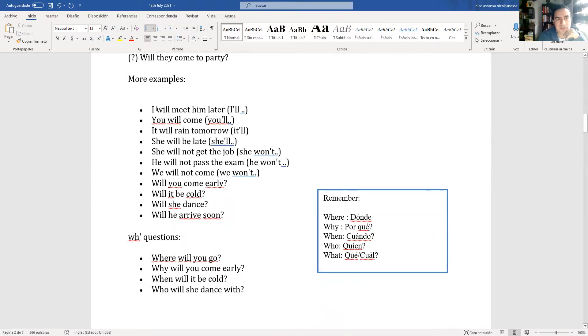More examples: I will meet him later, contraction I'll. I'll meet him later. You will come, contraction you'll come. It will rain tomorrow, it'll rain tomorrow. You will be late, you'll be late. She will not get the job, she won't get the job. He will not pass the exam, he won't pass the exam. We will not come, we won't come. Will you come early? Will it be cold? Will she dance? Will he arrive soon?